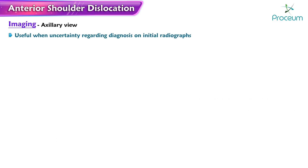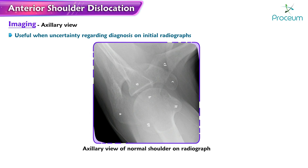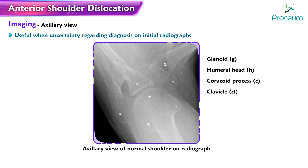An axillary view may be useful and should be obtained whenever there is uncertainty regarding the diagnosis on initial radiographs. This view of a normal shoulder shows the components including the glenoid, humeral head, coracoid process, clavicle, lesser tuberosity, acromion, and greater tuberosity.